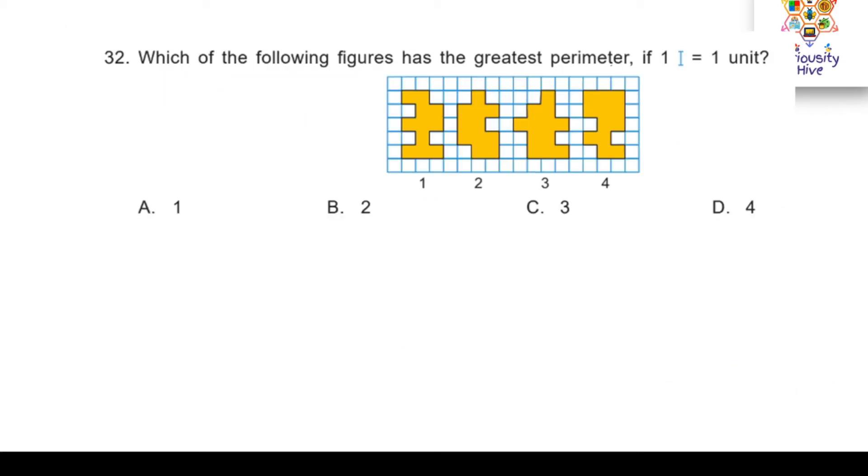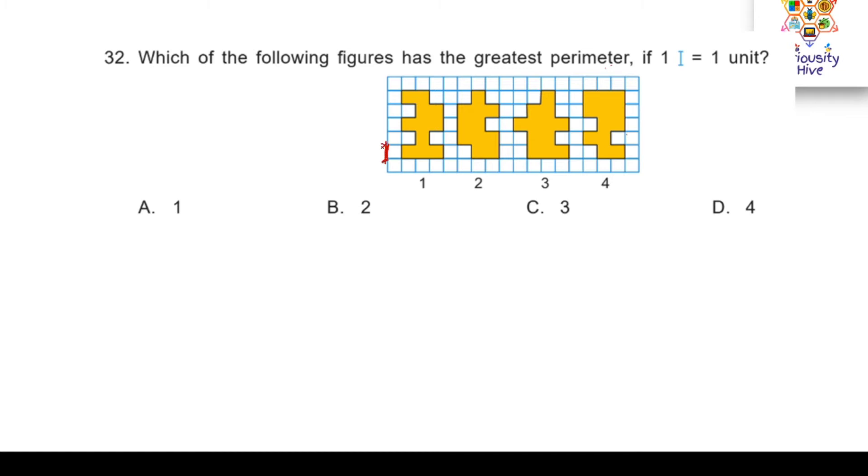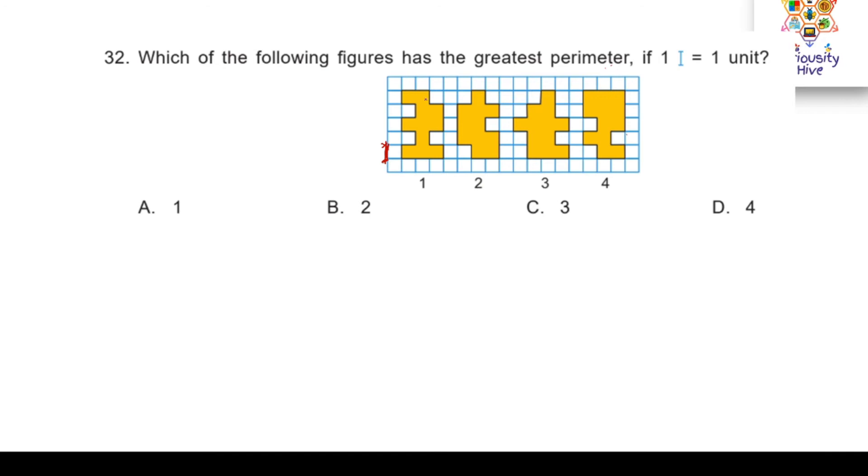Next question: which of the following figure has the greatest perimeter if one line, that is this box, is one unit? This is one unit. The options are given here. Take your time and think about the answer. Perimeter is the length of the boundaries. Let me explain with example how we can get to an answer quickly. For this, I will give you a quick clue how we can approach this.